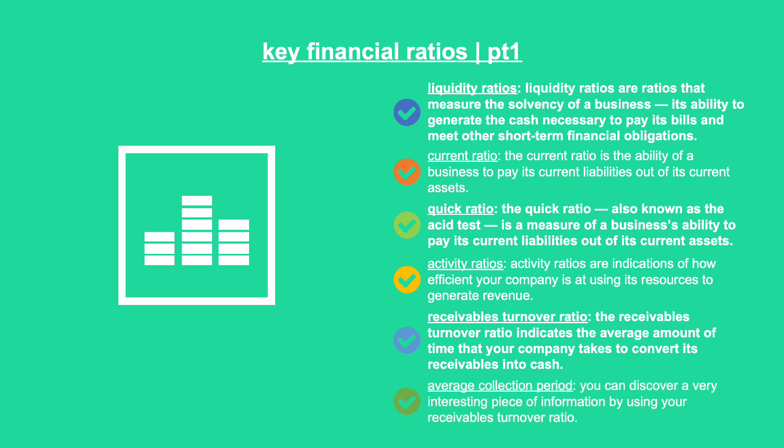Average collection period: you can discover a very interesting piece of information by using your receivables turnover ratio. By dividing 365 days by your receivables turnover ratio, you find out the average number of days that your company takes to turn over its accounts receivable — this result is known as the average collection period. For example: average collection period equals 365 days divided by receivables turnover ratio, equals 365 divided by 6.67, equals 54.7 days. The lower the number, the better, as a low number indicates that your customers are paying their bills quickly, which gives you more cash to work with.